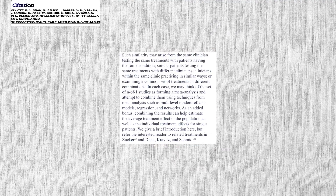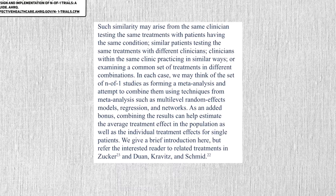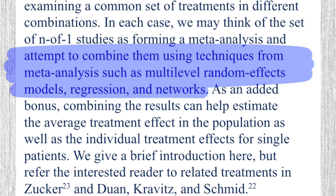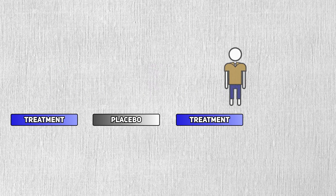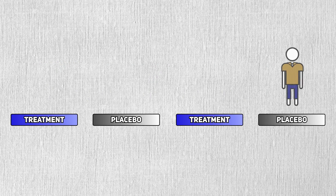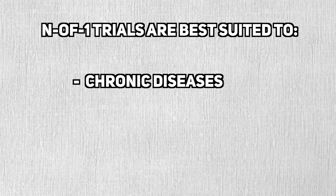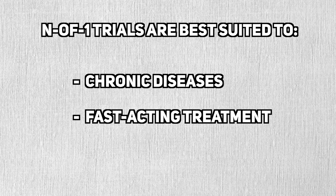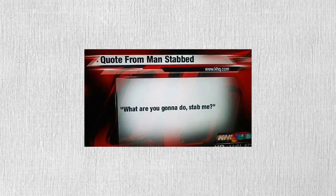That being said, there are ways to circumvent this generalizability problem using more advanced models, but that's a topic for another video. Since we need to follow someone over time, possibly a long amount of time, N of 1 trials are best suited to chronic diseases. It's also better if the treatment works immediately. This rules out using the N of 1 trial for acute events like accidents or trauma, or with slow-acting treatments.